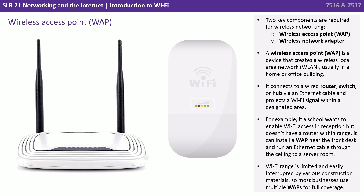Two key components are required for wireless networking: a wireless access point and a wireless network adapter. A wireless access point is a device that creates a wireless local area network, or WLAN, usually in a home or office building. It connects to a wired router, switch, or hub via an ethernet cable and projects a Wi-Fi signal within a designated area.